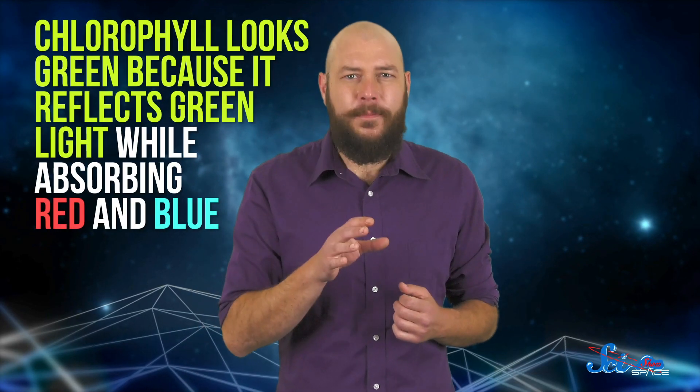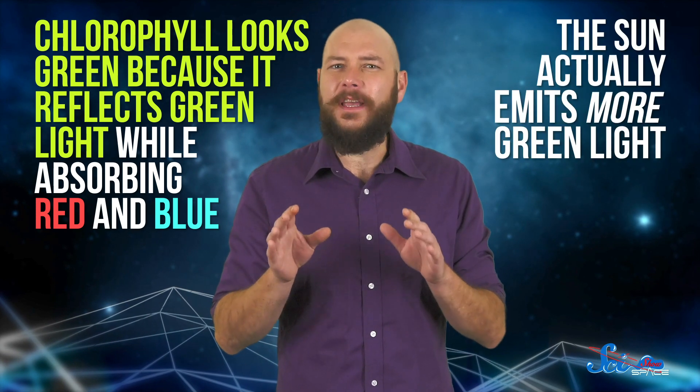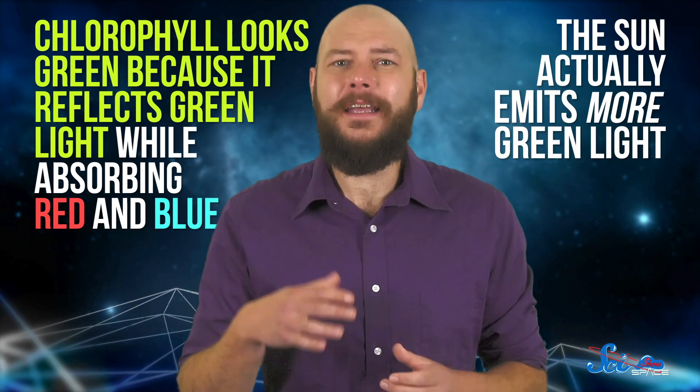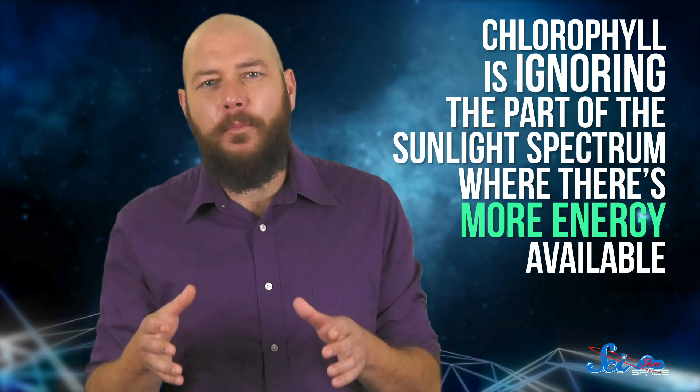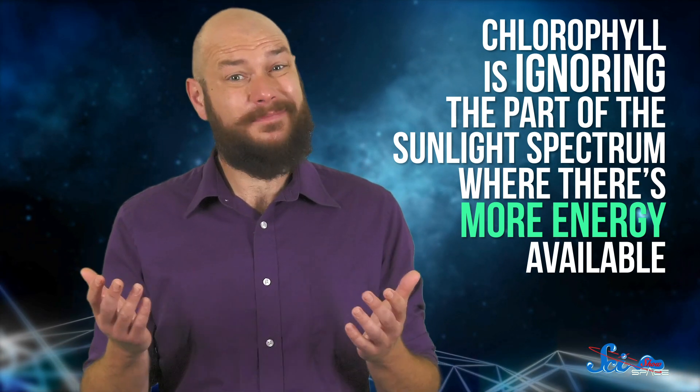But it also doesn't really make sense. Chlorophyll looks green because it reflects green light, while absorbing red and blue. But the sun actually emits more green light. In other words, chlorophyll is ignoring the part of the sunlight spectrum where there's more energy available, which seems kind of silly.